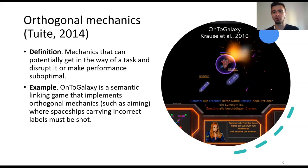But we are particularly interested in orthogonal mechanics. Orthogonal mechanics are defined as those mechanics that can potentially get in the way of an annotation task in a game with a purpose. Even if they are desirable on the one hand because they resemble commercial games, their impact on the annotation outcomes are unpredictable and therefore they must be handled with care.